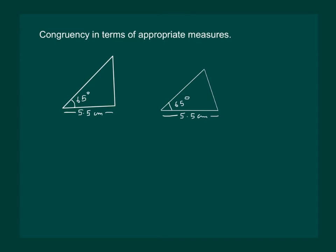No, we cannot, because we can draw many triangles which can have one of the sides to be 5.5 cm and one of whose angles is 65 degrees, but still they are not congruent to our given triangle.